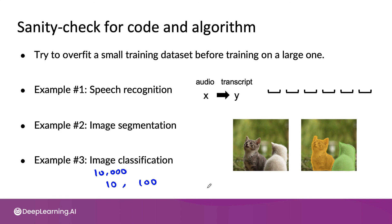This would be another useful sanity check for your code. After you've trained your first model, one of the most important things is how do you carry out error analysis to help you decide how to improve the performance of your algorithm. Let's go on to the next video to dive into error analysis and performance auditing.